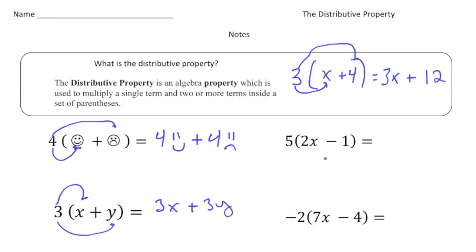Now this one's a little different because notice we have a subtraction sign here. So this is going to be five groups of 2x, which is 10x. And now this subtraction sign belongs to the one. So we could say this is a negative one. So five groups of negative one is negative five or just a minus five.